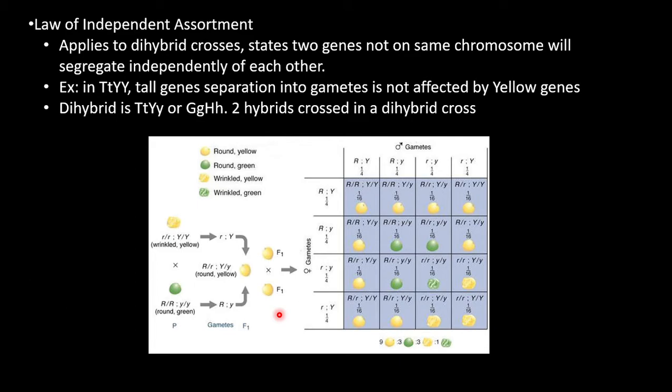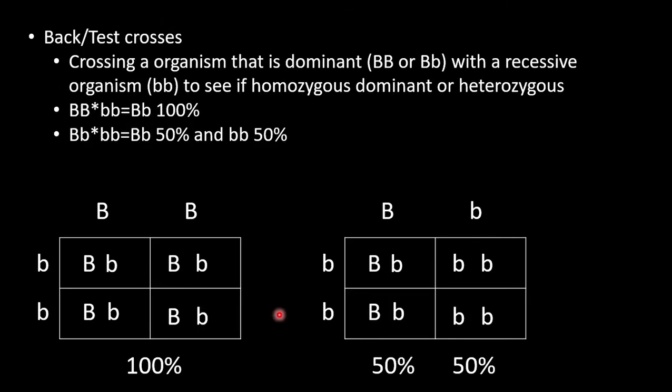A dihybrid cross is a cross between two hybrids. As shown in the diagram, the outcome will always follow the 9-3-3-1 pattern, where the probability of getting both dominant traits is 9 out of 16, the probability of getting a dominant and recessive trait is 3 out of 16, a recessive and dominant trait is also 3 out of 16, and finally the probability of getting both recessive traits is 1 out of 16.